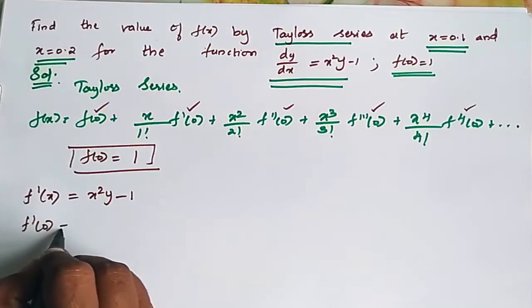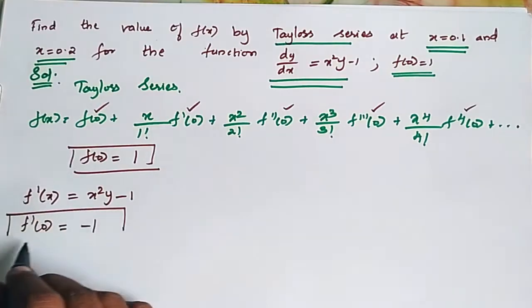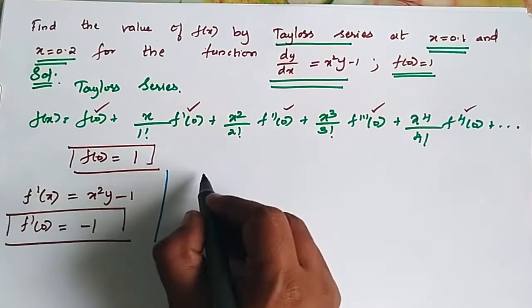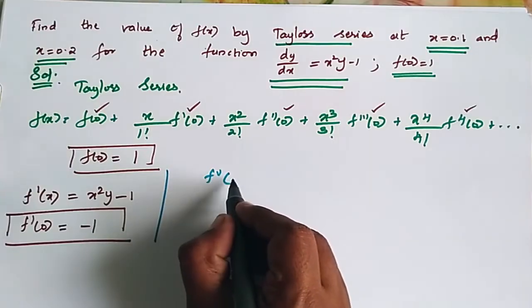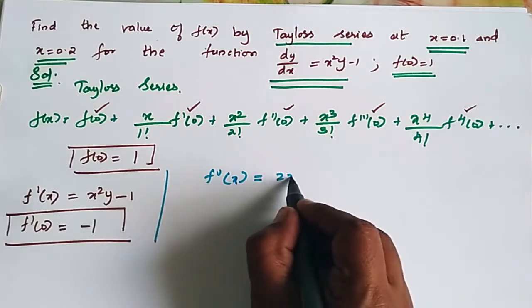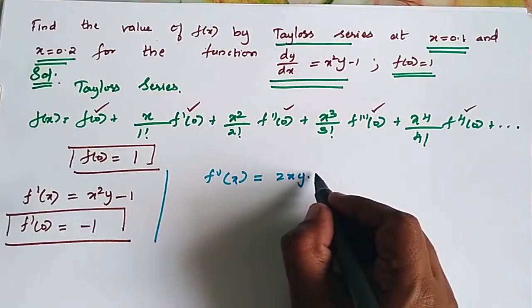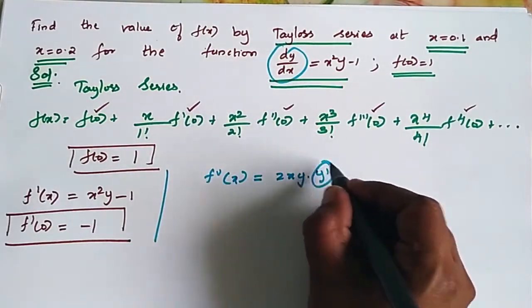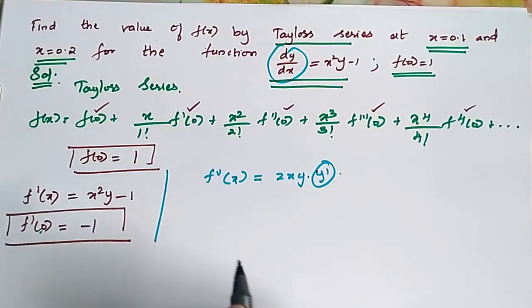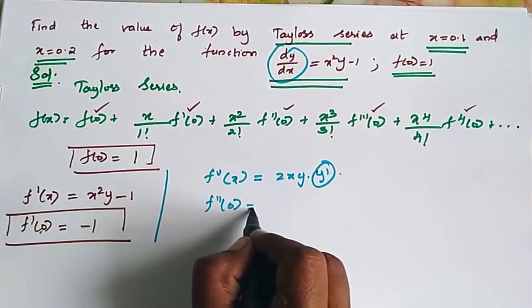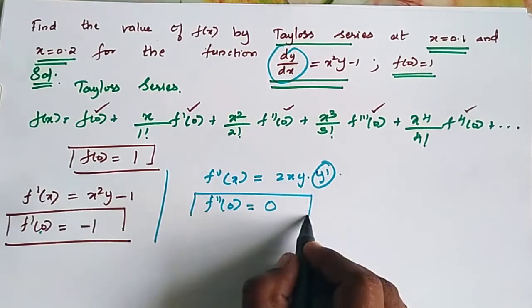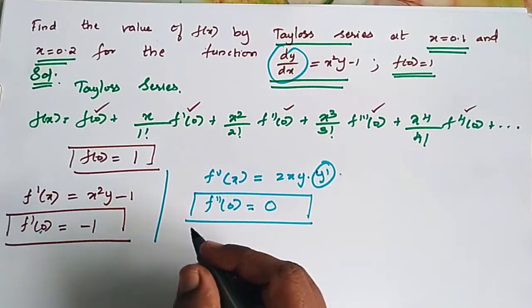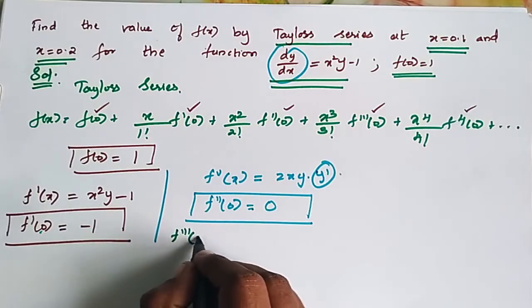F dash of 0 is equal to minus 1. Now, f double dash of x is equal to 2xy, and differentiating further using y dash, where y dash is dy by dx which is f dash of x. Substituting x equal to 0, we get f double dash of 0.